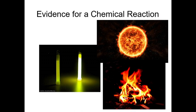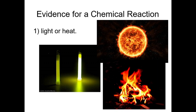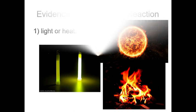In a chemical reaction, there is evidence that it has taken place. The first evidence is light or heat. Most chemical reactions emit light or heat when they happen. A good example is the sun — the chemical reaction happening in the sun emits light, which is the radiant energy that plants use to photosynthesize. So it comes from a chemical reaction and emits both light and heat.